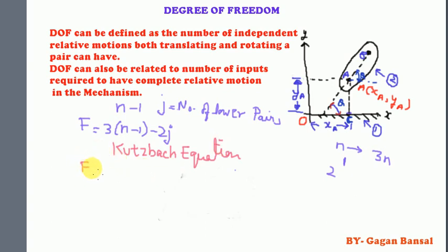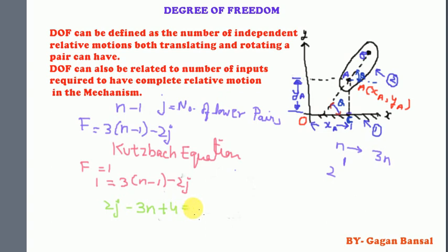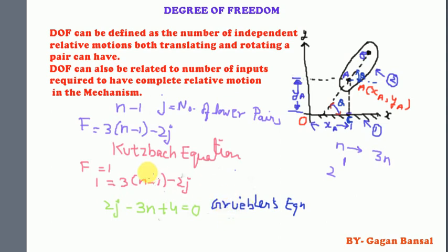Also, if F equals one, the equation becomes 1 = 3(n−1) − 2j, which rearranges to 2j − 3n + 4 = 0. This equation is known as Grubler's equation. Grubler's equation can be defined as the equation obtained when the degree of freedom of a planar mechanism is one.